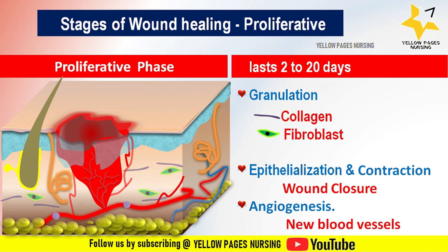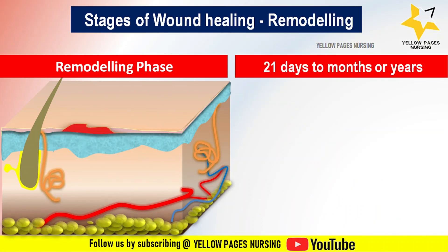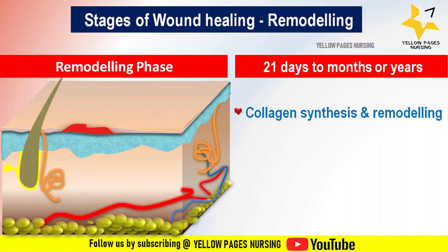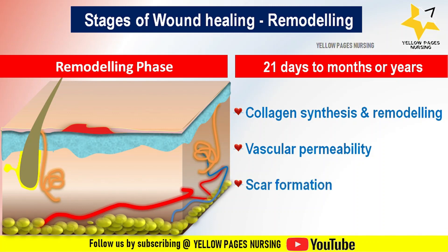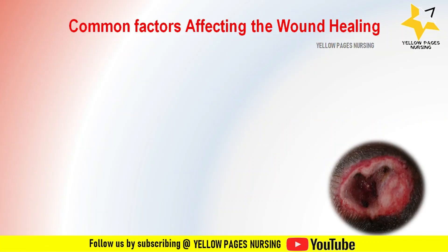The last stage is the remodeling phase, which may occur from 21 days to months or even years. Here, collagen synthesis and remodeling occurs — collagen fibers are rearranged and cross-linked to increase the strength of the wound. The scar tissue gradually becomes stronger but does not regain the full strength of the original tissue. There is decreased vascularity, so blood vessels in the healed wound decrease and the wound appears paler. The wound is filled with scar tissue composed primarily of collagen fibers.